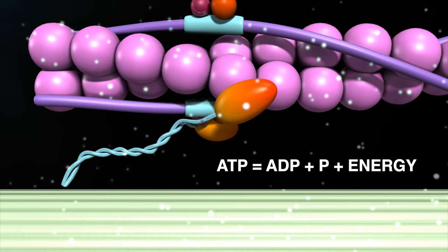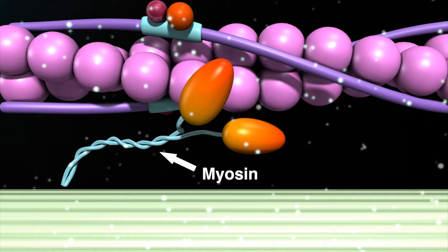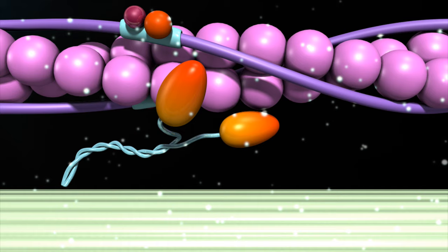The breakdown of ATP releases energy, which enables the myosin to pull the actin filaments inwards, contracting the muscle. This occurs along the entire length of every myofibril in the muscle cell.